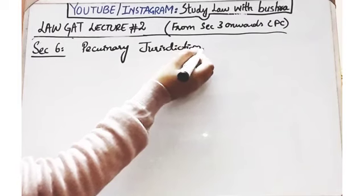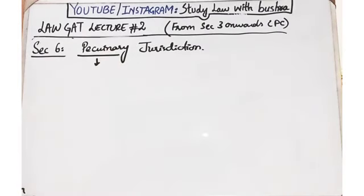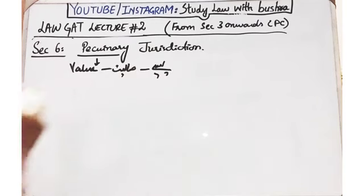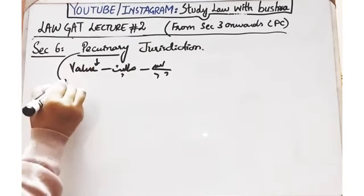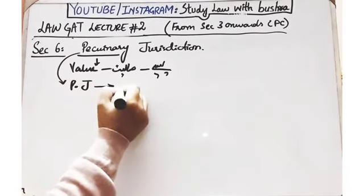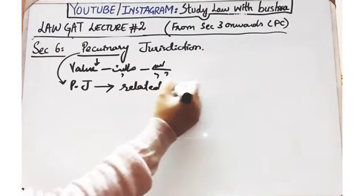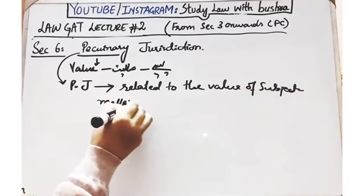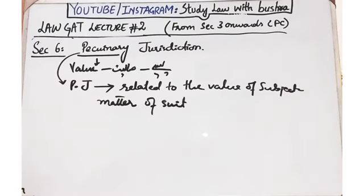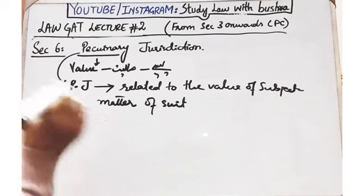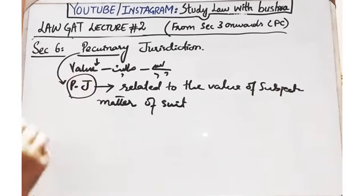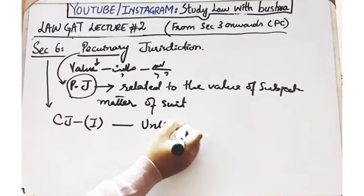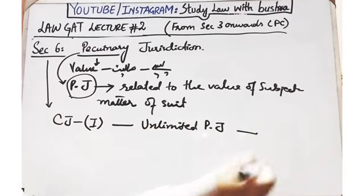Section 6 deal कर रहा है pecuniary jurisdiction के साथ। Pecuniary jurisdiction नाम से ही ज़ाहिर है — यह word monetary से निकला है यानि पैसे से। Pecuniary jurisdiction is simply the jurisdiction of the court which is related to the value of the subject matter of the suit. याद रखें कि कोई भी court अपनी pecuniary jurisdiction की limitation से बाहर निकल कर कोई भी suit नहीं सुन सकती।